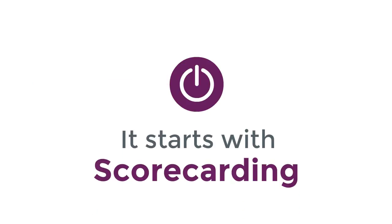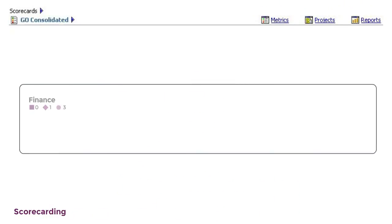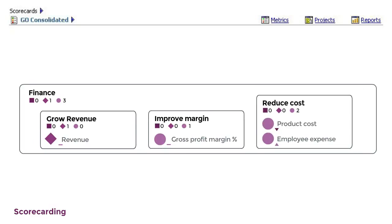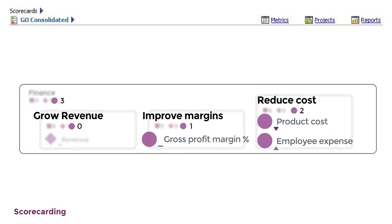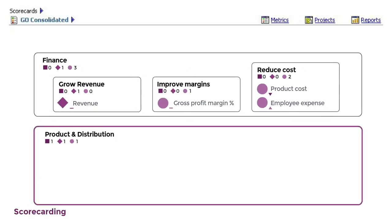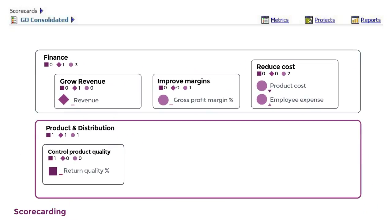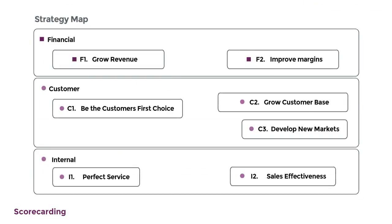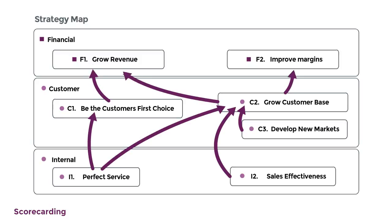It starts with scorecarding. More than just simply reporting on aggregated data, scorecarding is a unique and powerful solution that allows you to visually capture organisational strategy. It provides a common language for strategy to translate into actionable and measurable key performance indicators. You can link corporate strategy to operational tactics.